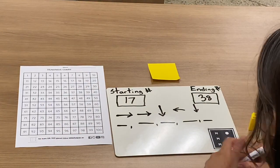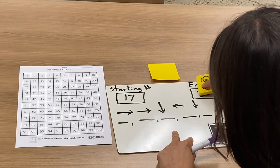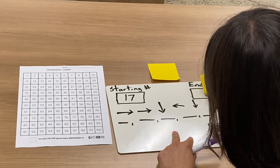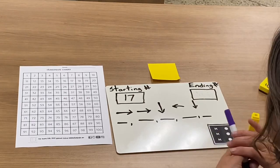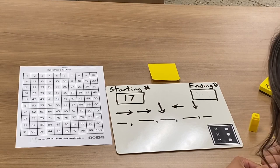Now I'm going to erase my ending number and I'm going to switch my board with my partner and see if they can break my code.